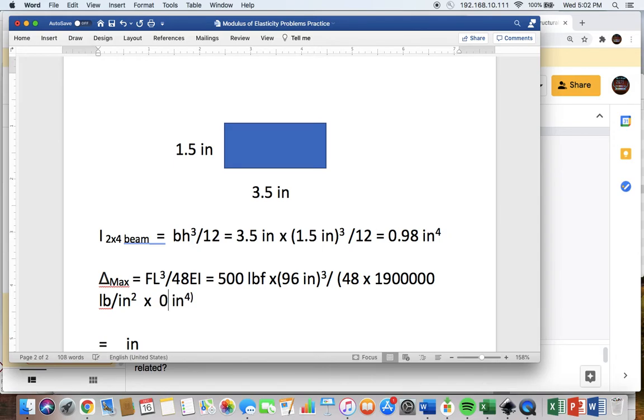Multiplied lastly by the moment of inertia, 0.98 inches to the fourth. And if you do that, you get a bending deformation of 4.95 inches. Thank you for listening.